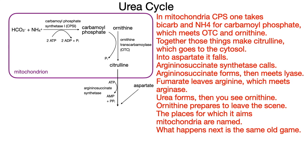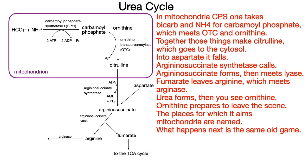Argininosuccinate synthetase calls. Argininosuccinate forms, then meets lyase. Fumarate leaves arginine — which means arginase. Urea forms, then you see ornithine.